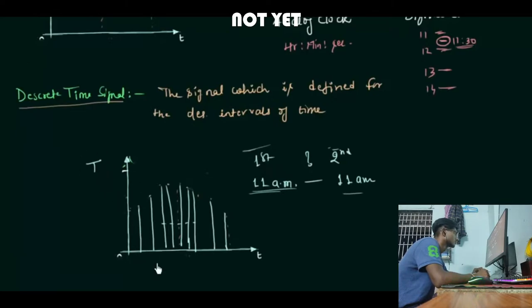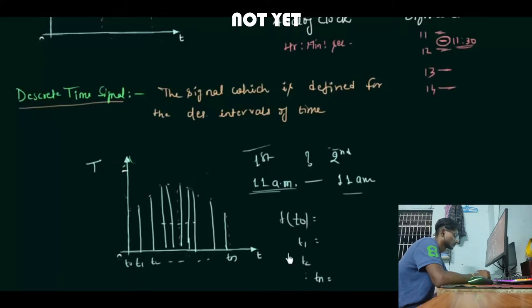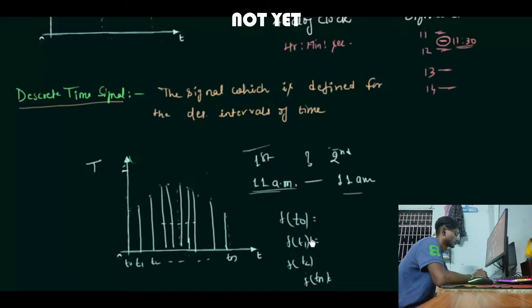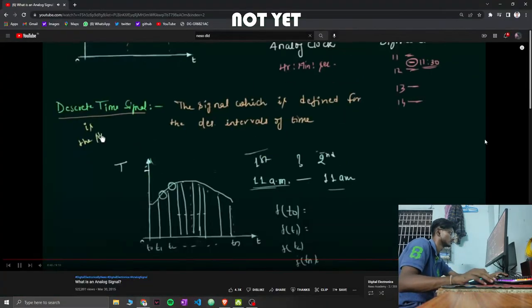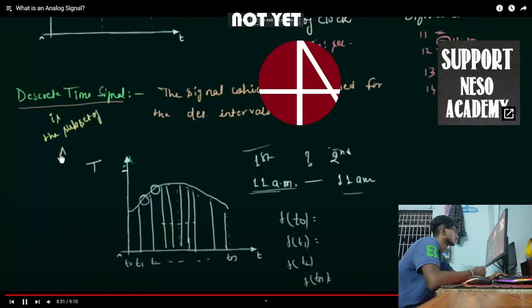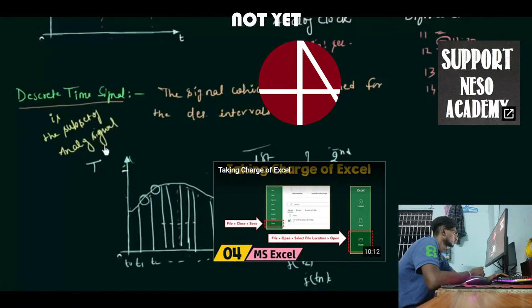We have the value of the function only at those discrete times. What is between T0 and T1? We don't know, because we have not monitored the function for that interval. The underlying change is actually analog, but since we have not monitored those sections, we have a discrete time signal. Importantly, the discrete time signal is a subset of the analog signal. All real-life signals are analog signals.